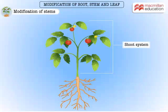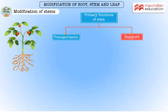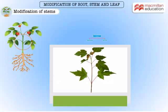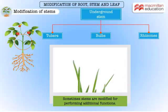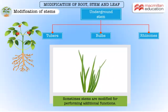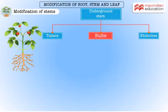We now move on to the shoot system. The primary functions of a stem are transportation of fluid and nutrients to different parts of the plant, and providing support. Sometimes the stems are modified for performing additional functions. Stems of some plants grow underground and store food. Underground stems can be classified into tubers, bulbs, and rhizomes.